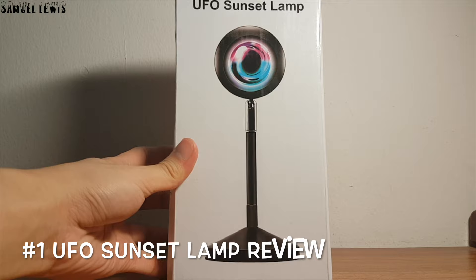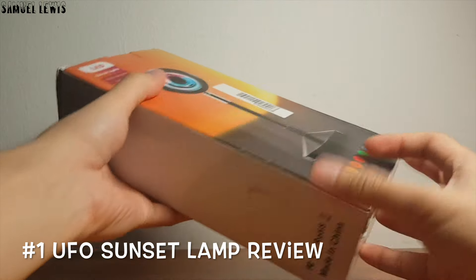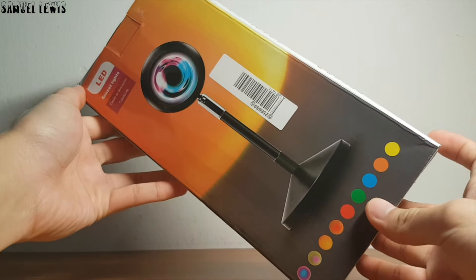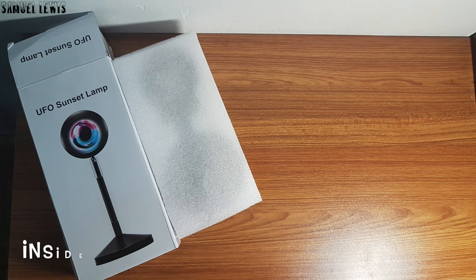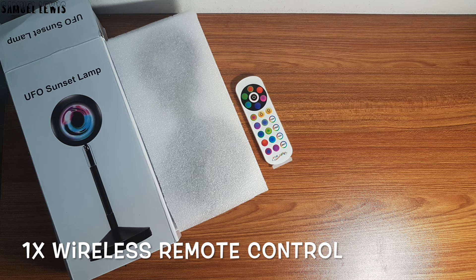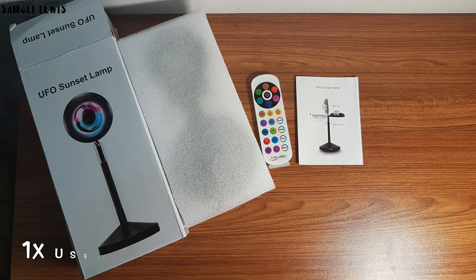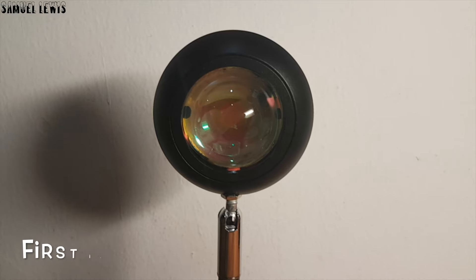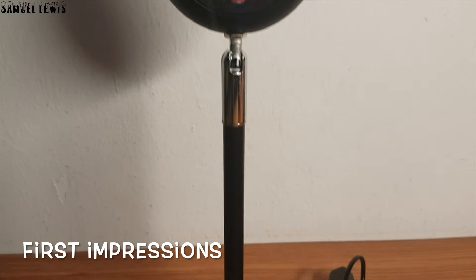First I will be checking out the USB sunset lamp, which is a special kind of LED lamp designed to have that sunset special effect when turned on. Inside the box you will find one wireless remote control for you to control the LED lamp. A user guide is provided to help get you started on using the device.